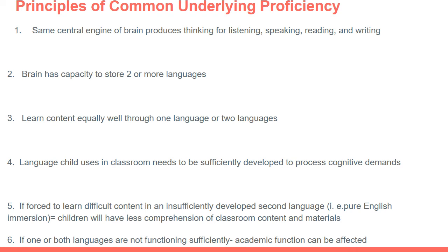To discuss common underlying proficiency in greater detail — the same central engine of the brain produces the thinking for any type of language and any type of language domain. Whether you're listening or speaking in English or Spanish, you're using the same part of the brain. The main takeaway is that the brain has plenty of capacity to store two or more languages, will not get confused by learning a second language, and can use some of the same skills from the first language to help acquire the second language.